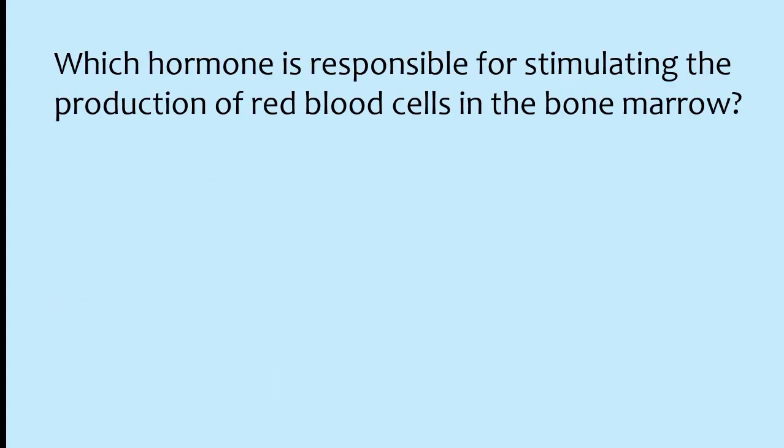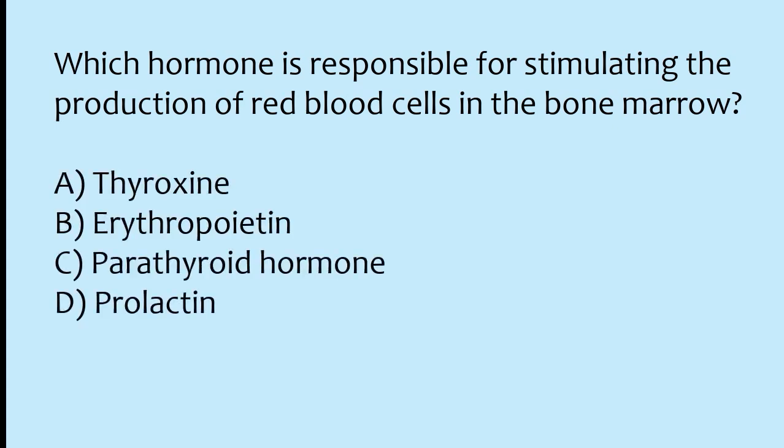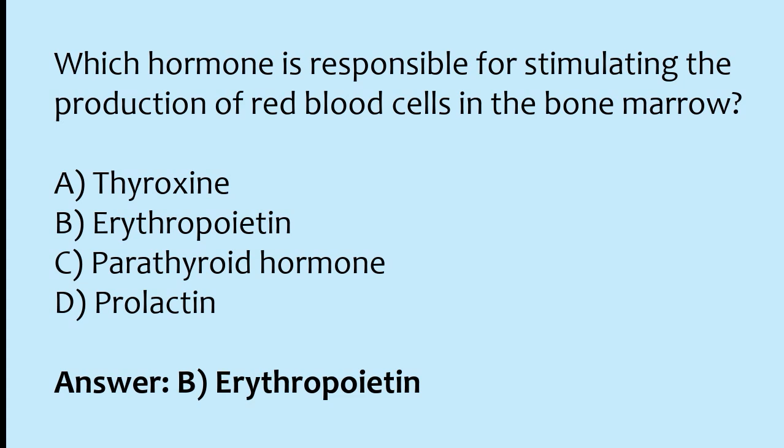Which hormone is responsible for stimulating the production of red blood cells in the bone marrow? Options: thyroxine, erythropoietin, parathyroid hormone, prolactin. The correct answer is option B: erythropoietin hormone is responsible for stimulating the production of red blood cells in the bone marrow.